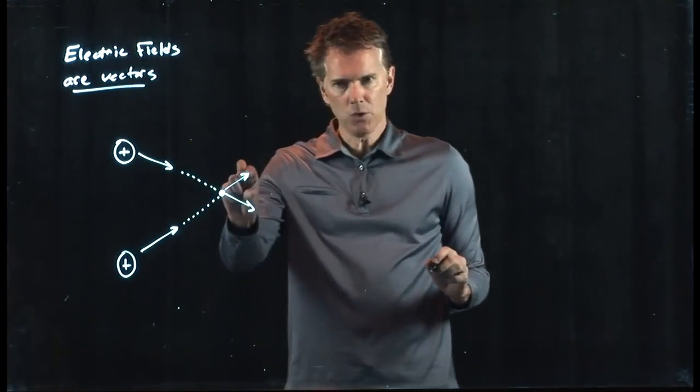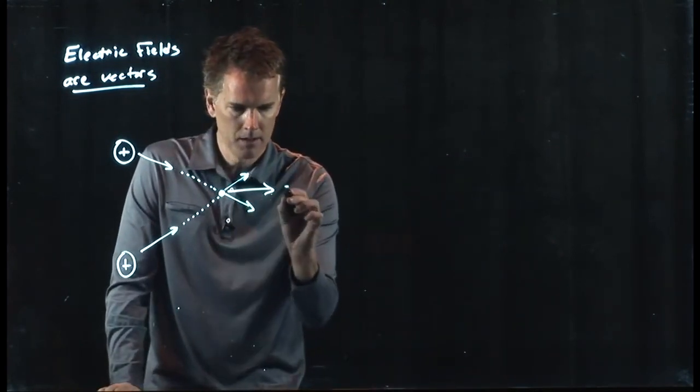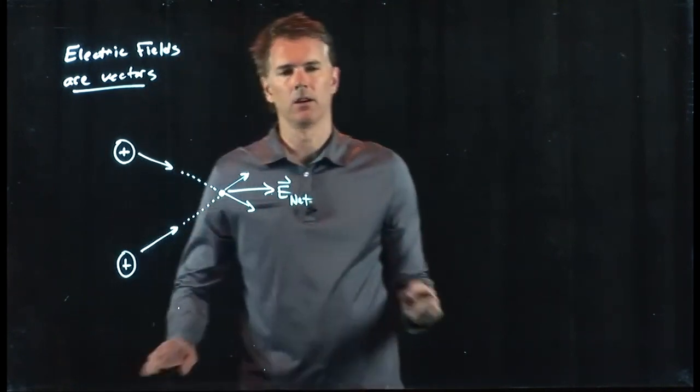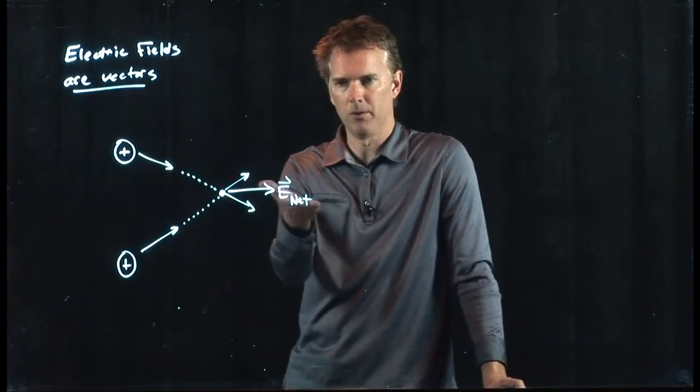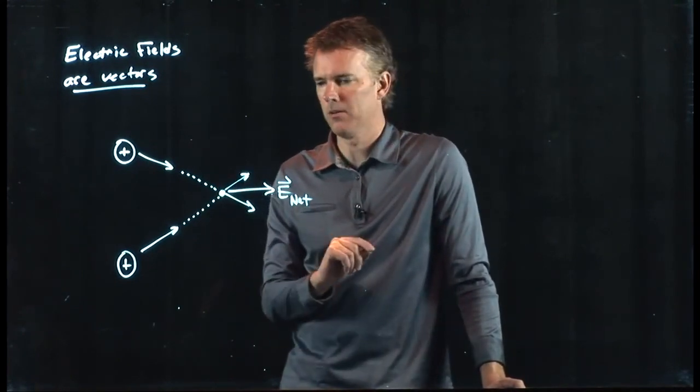And now if I add two vectors like that, I know what they have to be. It has to be all to the right—they're going to cancel out vertically, they're going to contribute horizontally, and you get a net electric field that is in that direction.